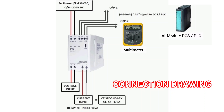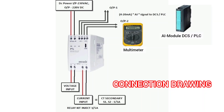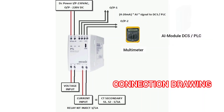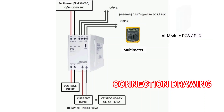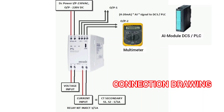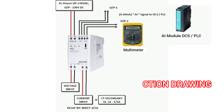We can connect both 4 to 20 milliamp output signals to DCS, PLC, or HMI systems to measure the load of the system. For switching the current transverser on or off, we have to give auxiliary supply of 220 volt DC or AC to terminals 13 and 14.